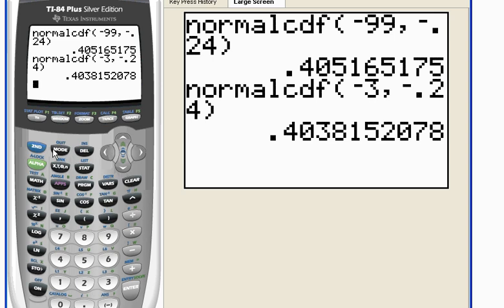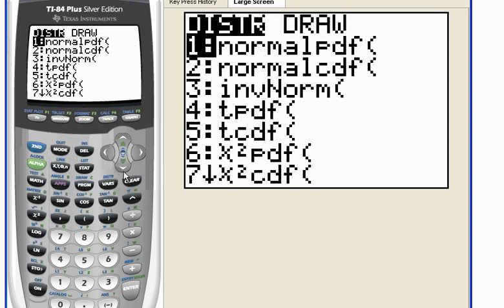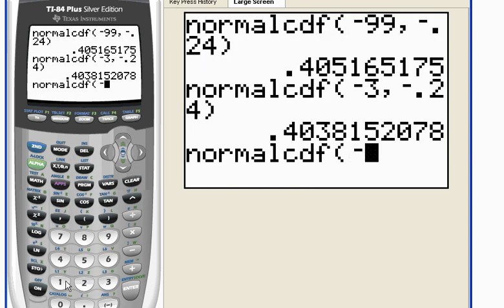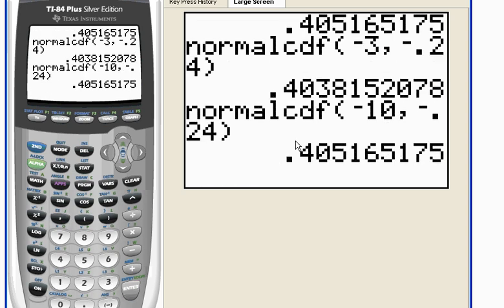If I were to do this again and change this so that I go out, let's go out to a left-hand boundary of negative 10 and negative 0.24. And go ahead and hit enter. I'm getting a little bit closer, 0.40516, 0.40516.